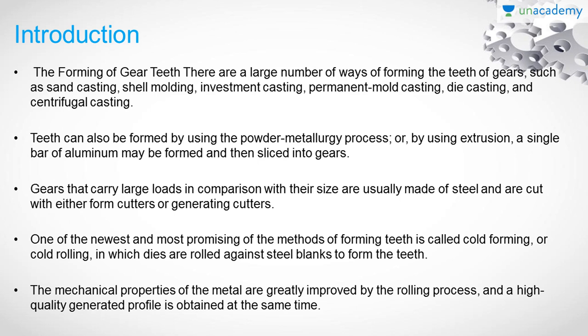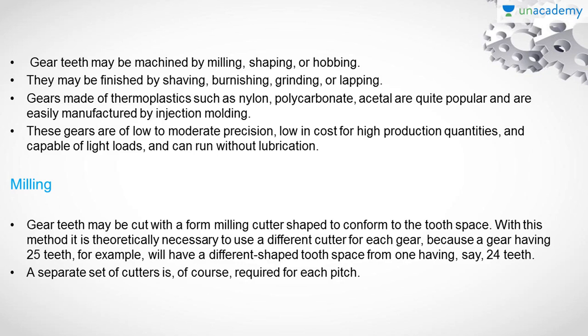One of the newest and most promising methods of forming teeth is called the cold forming or cold rolling process, in which dies are rolled against steel blanks to form the teeth. This is the most important process commonly used nowadays. The advantage of this process is that the mechanical properties of the metal are greatly improved by the rolling process, and a high quality generated profile is obtained at the same time.